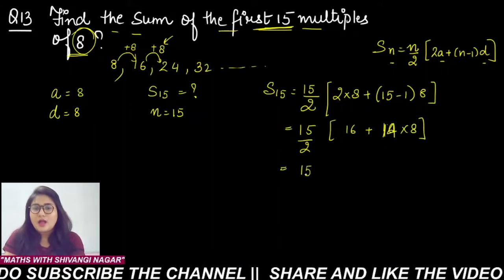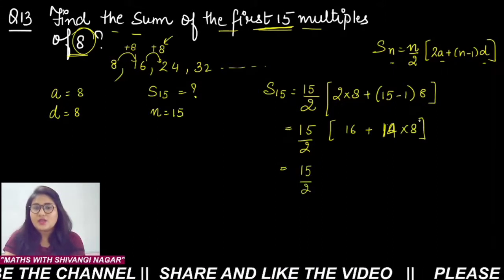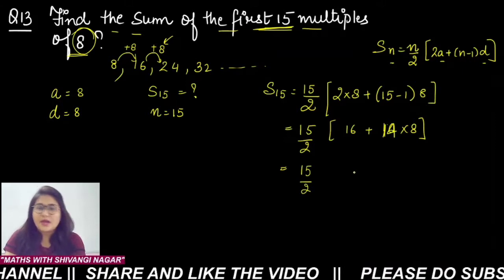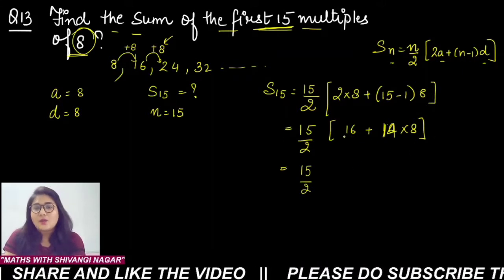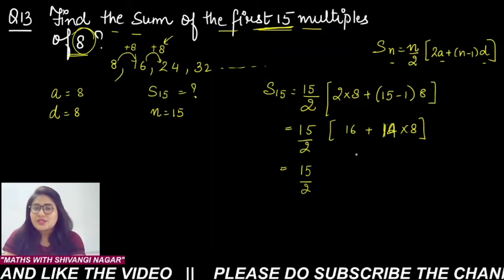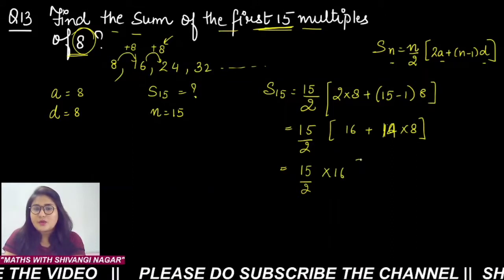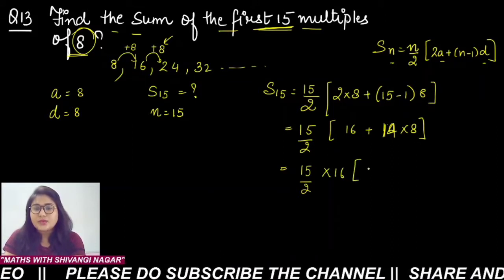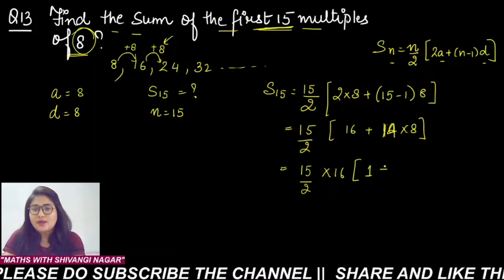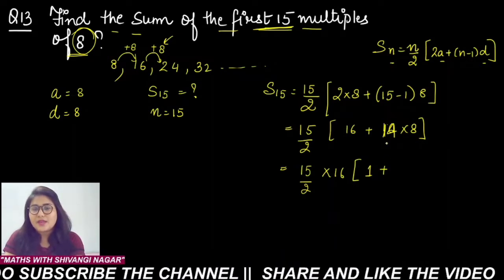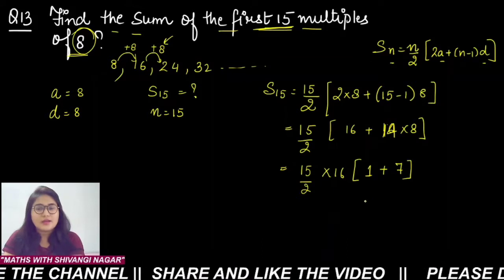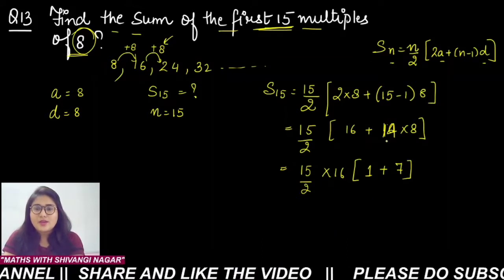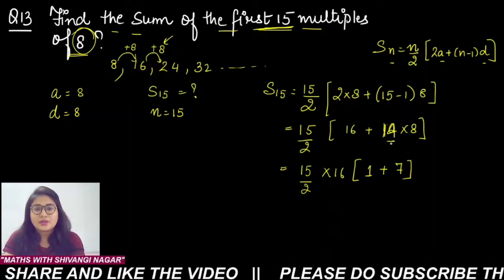Now to remove the denominator, take the common factor out. What is common here? 16 is common, so we took 16 common. What we are left over with is 1 plus 7 here, because 8 is taken out and from 14 you took 2 out, so only 7 remains.